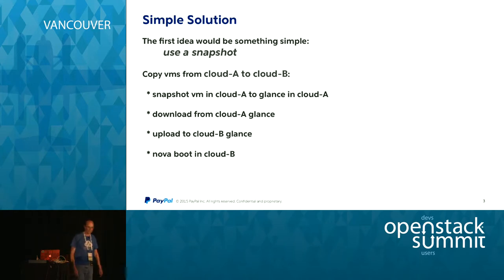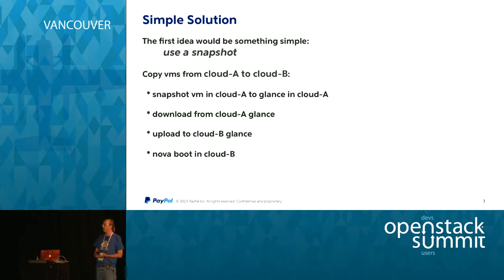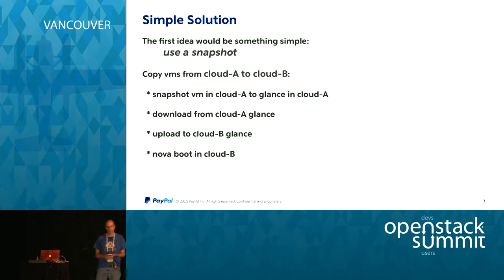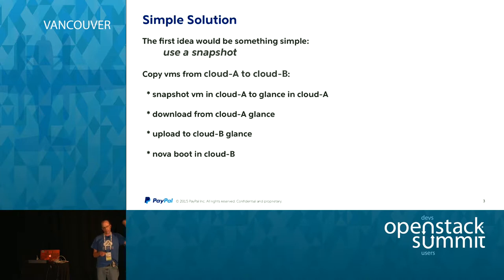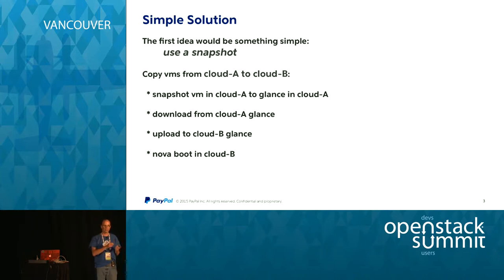The first thing you'd try using OpenStack is just make a snapshot. Use Glance, download your snapshot, copy it to the other server, upload it into Glance on the other side, and boot your machine. But the problem with that is, say you have 100 machines and each one has a 30 gigabyte disk. Even over a 10 gig link, 30 gigabytes takes some time. You download it and then upload it to Glance — you've taken a snapshot of a machine that was taking no space in Glance other than the original image, and now you've made 30 gigabytes on your target Glance.